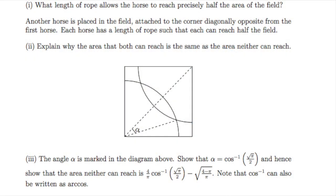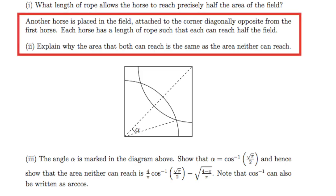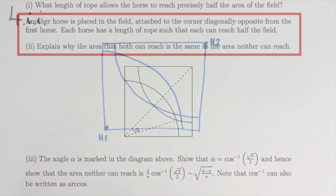Now we're told that another horse is placed in the field, attached to the corner diagonally opposite from the first horse. Each horse has the rope length we just calculated, which is the square root of 2 over pi. For part II, we need to explain why the area that both horses can reach is the same as the area that neither can reach.